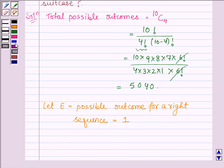Therefore, the probability of event E to get the right sequence to open the lock is 1 divided by the total number of possible outcomes.